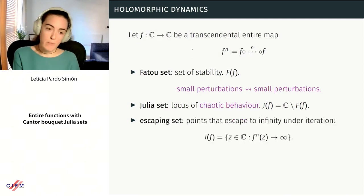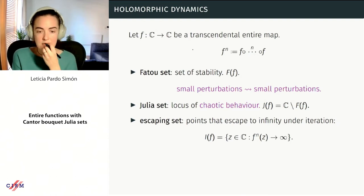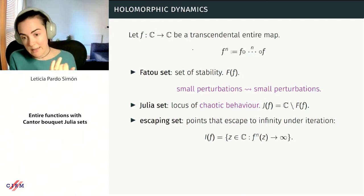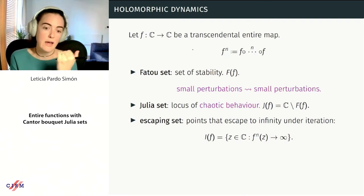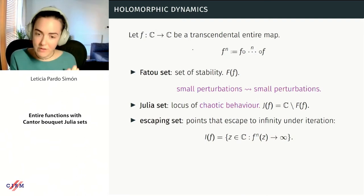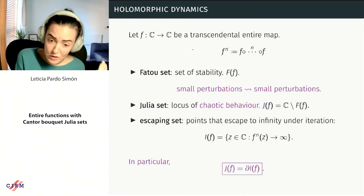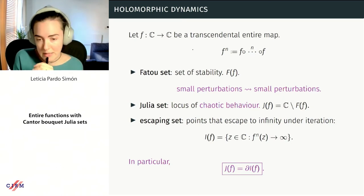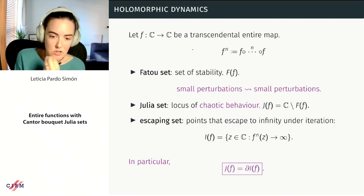As Ana highlighted this morning, the escaping set — the set of points that escape to infinity under iteration, denoted I(F) — plays a very important role in the dynamics of transcendental maps. As in the normal case, the Julia set is the boundary of this escaping set, and moreover, for the functions we're interested in, it's contained in the Julia set.